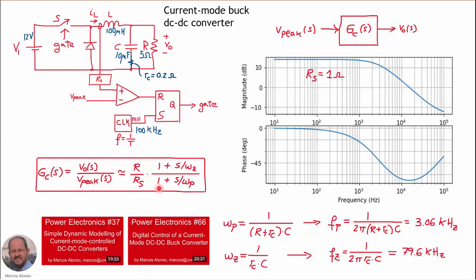This is the control transfer function: the output voltage perturbation over the current peak perturbation. Here we have the different converter values in blue. In this transfer function, the frequency of the pole is given by this expression — in this case approximately three kilohertz — and the frequency of the zero is approximately 80 kilohertz.